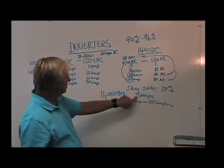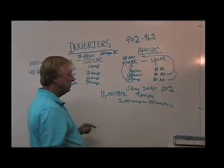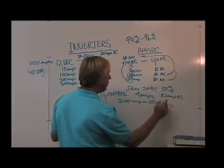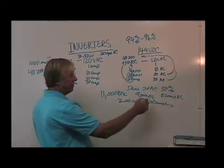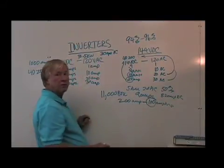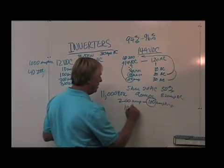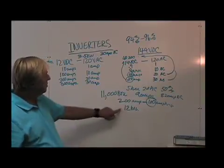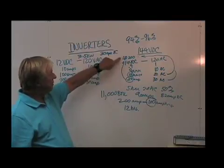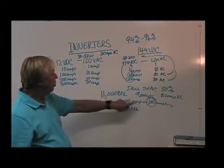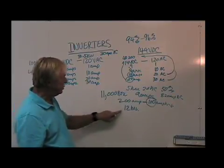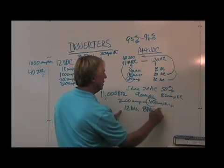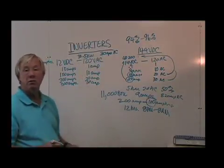And 9 amps is going to be about 8.2 amps of DC required to make 9 amps of AC. Divide 8.2 into 100, and now you have approximately 12 hours worth of running to 50% depletion, which means that this 144-volt DC battery pack at 200 amp-hours will run an 11,000 BTU air conditioner from 8 o'clock at night to 8 o'clock in the morning without having any generator running at all.